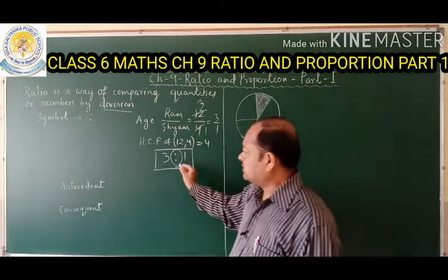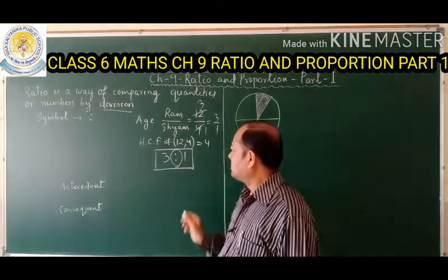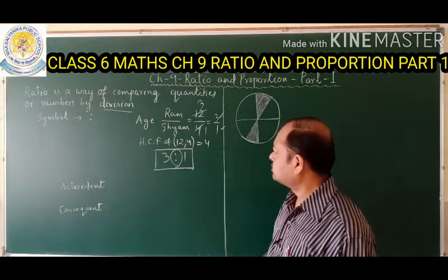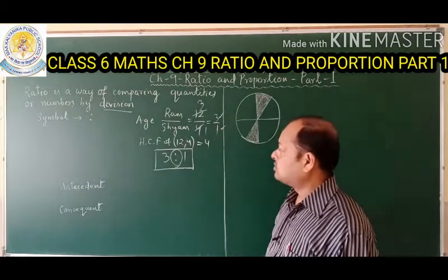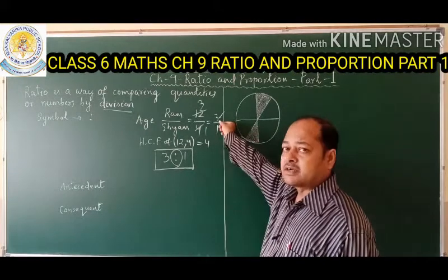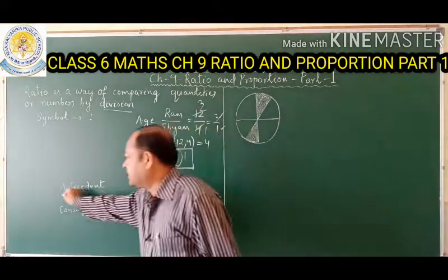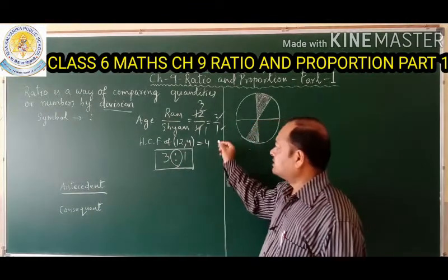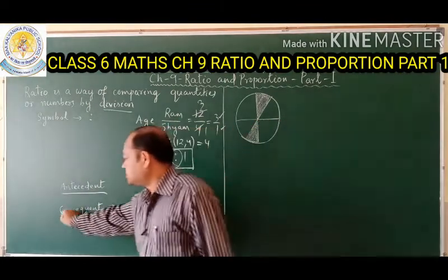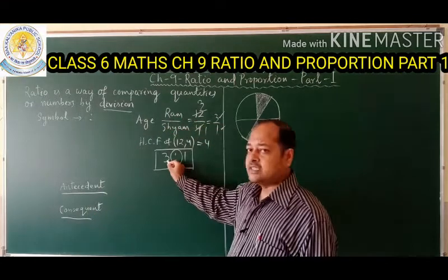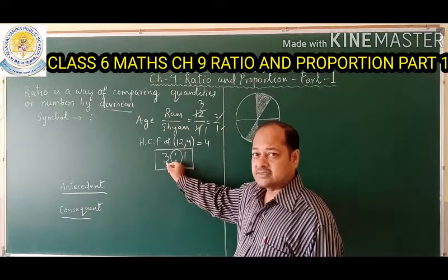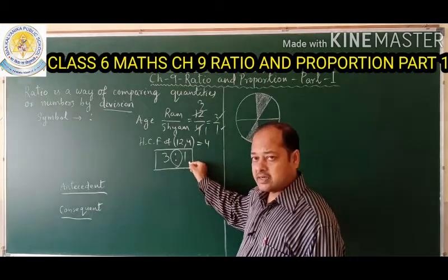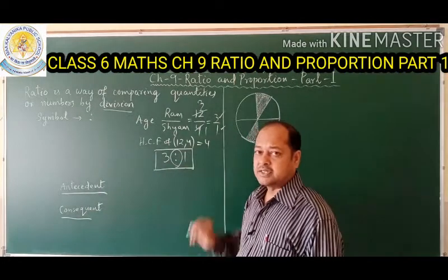Now in a ratio, there is a numerator and a denominator. The numerator is called the antecedent and the denominator is called the consequent. So in 3 is to 1, the antecedent is 3 and the consequent is 1. This is the concept of ratio.